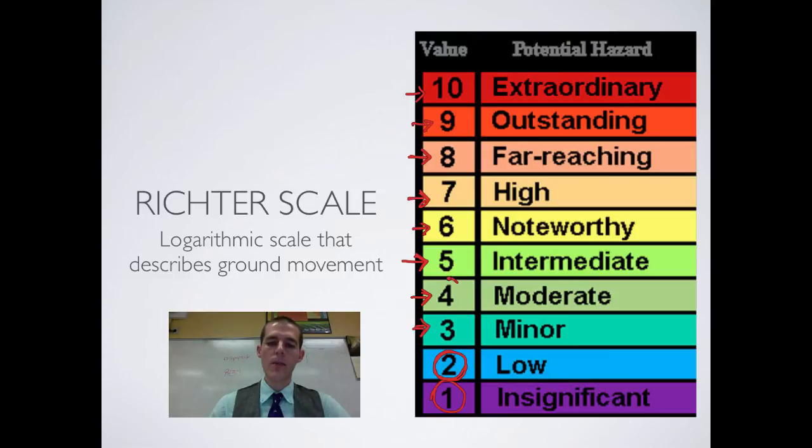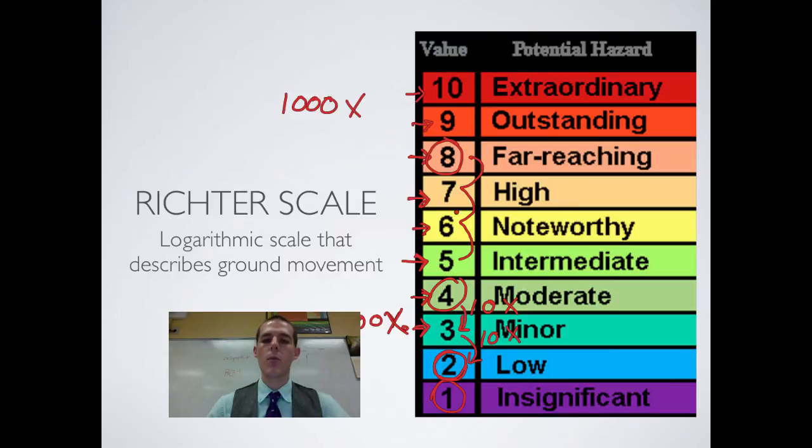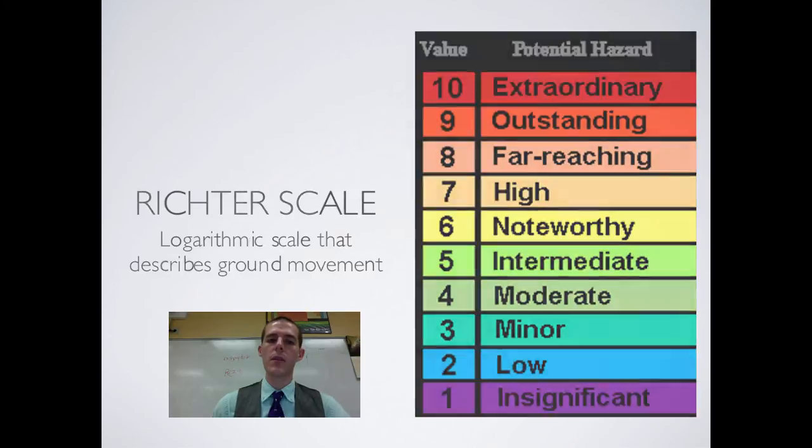If you wanted to compare these one to the other, you could say that a 4 is 10 times stronger than a 3. And if you remember, this goes by 10s. So, if we are going to compare a 4 to a 2, then it's times 10 again. So, you could say that a 4 is 100 times more powerful. Not percent. 100 times more powerful than a 2. Or you could say that an 8 is 10 times 10 times 10. And so, an 8 is 1,000 times more powerful than a 5. Make sure that you are able to do conversions within the scale to make comparisons.